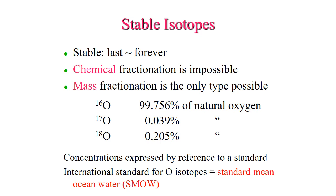If mass fractionation takes place, the light isotope will concentrate in the lighter phase — for example, it'll concentrate in vapor over water over the solid. The efficiency of mass fractionation, which we call F times the mass difference over the total mass, is dependent upon the mass of the isotope that we're dealing with.